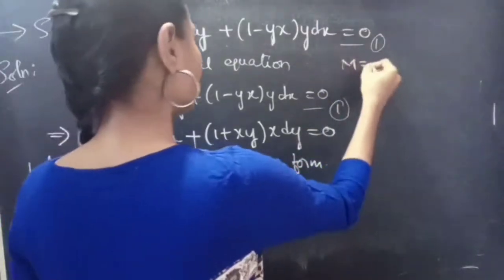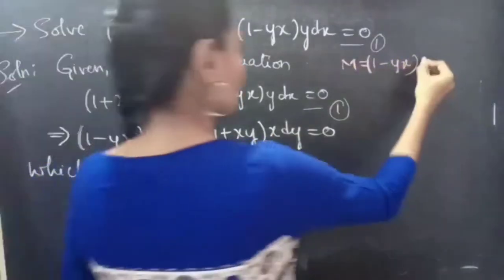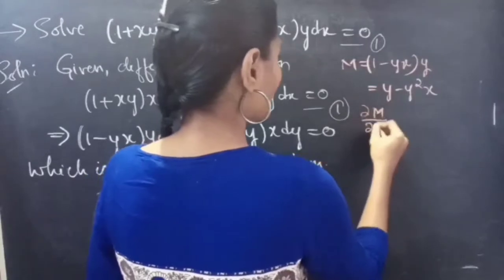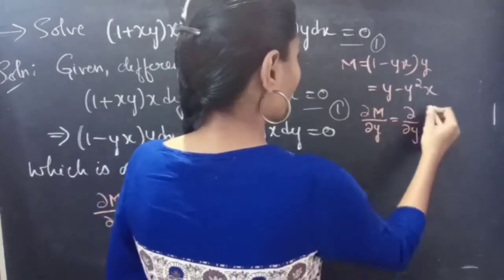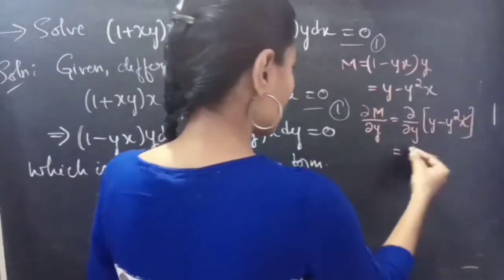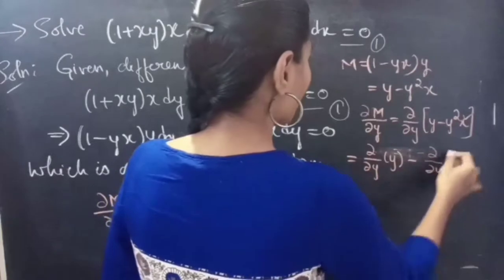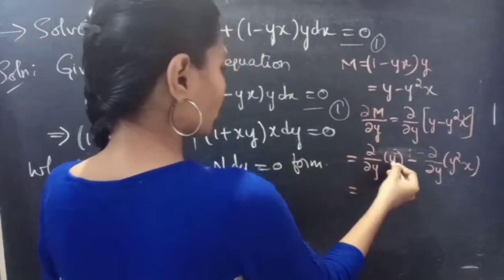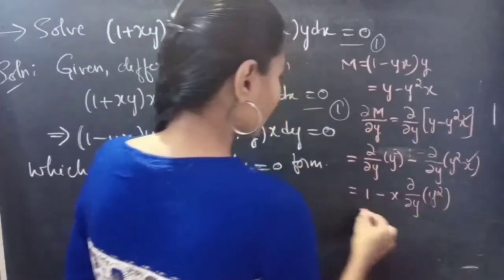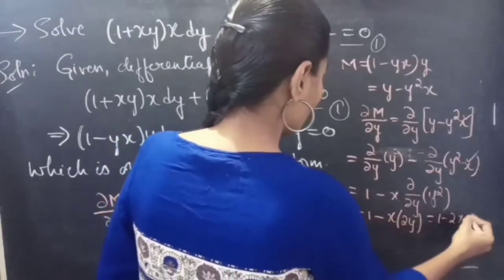We have M = (1 − yx)·y, which equals y − y²x. Now let's find the partial derivative of M with respect to y. Since we are doing partial derivative with respect to y, x is treated as constant. This equals the partial derivative of y minus the partial derivative of y²x, which gives 1 − 2xy.